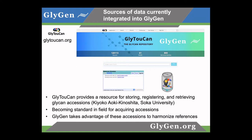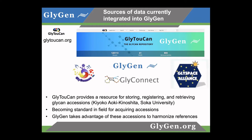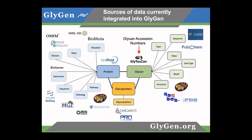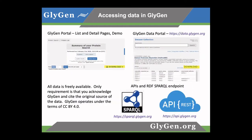I encourage you to go to GlyTouCan.org — anybody can provide a glycan and acquire an accession number that can be used for publications. Increasingly these accession numbers are becoming standards in the field. Together with Kyoko and Japan and Glycosmos, GlyConnect and SIB, and GlyGen, we've formed an alliance where we talk with each other to make sure we're rowing the boat in the same direction. There are three core domains of information that GlyGen integrates: protein data, glycoprotein data, and glycan data. These are the three ways one can enter the database.